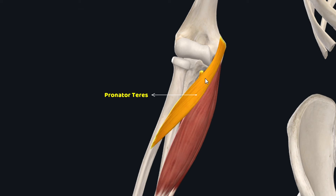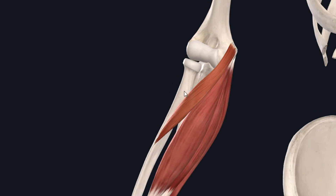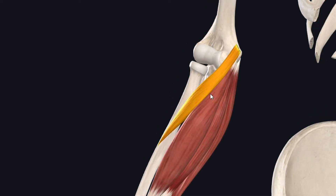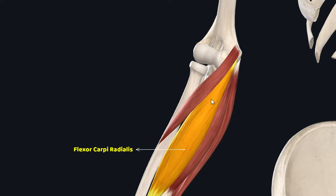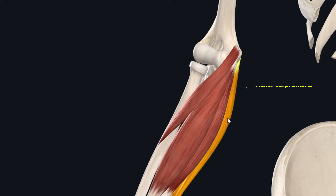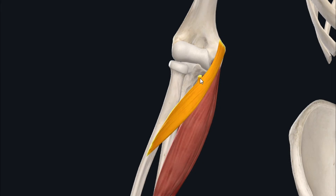The pronator teres is a fusiform muscle and it is one of the muscles of the superficial part of the anterior compartment of the forearm. The other three superficial flexors of the forearm lie just medial to this muscle: these are the flexor carpi radialis, palmaris longus, and the flexor carpi ulnaris in a lateral to medial fashion. The lateral margin of the pronator teres muscle forms the medial boundary of the triangular anatomical area called the cubital fossa.